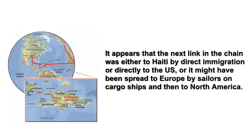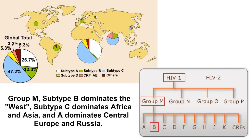It appears that the next link in the chain was either to Haiti by direct immigration, or directly to the U.S., or it might have been spread to Europe by sailors on cargo ships and then to North America. The data is a bit spotty, but the emergence in the major cities of Europe was slightly after the disease was documented in New York and San Francisco.